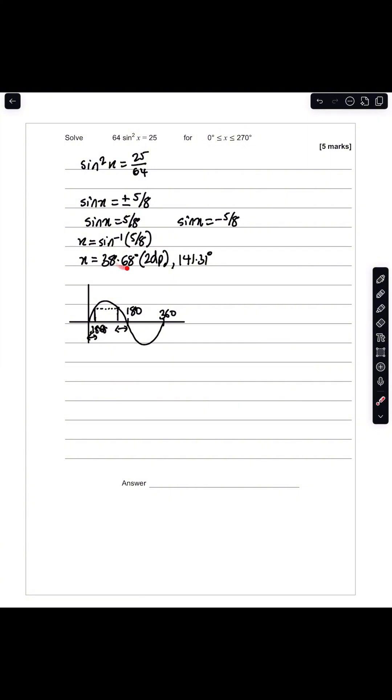Then to obtain the other values for x, I'm going to take the sine inverse of negative 5 over 8. This will give you minus 38.68 degrees.